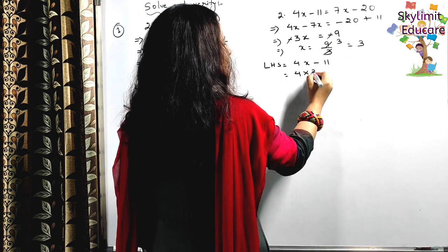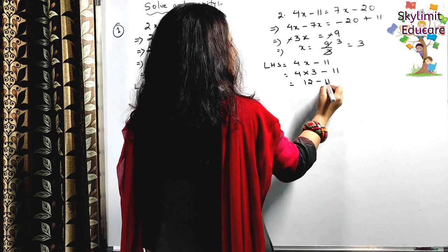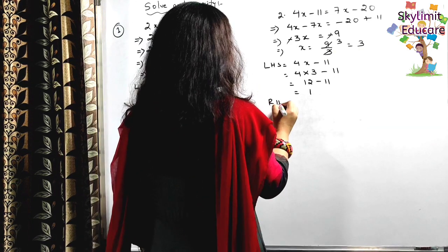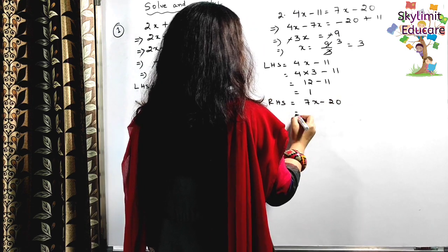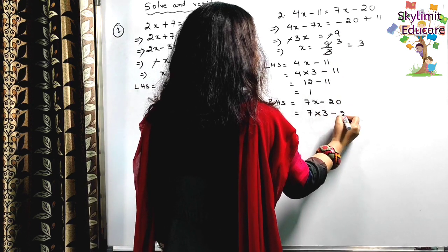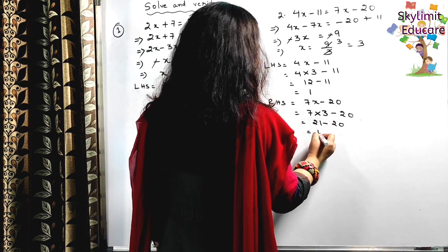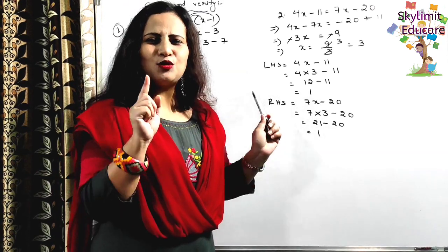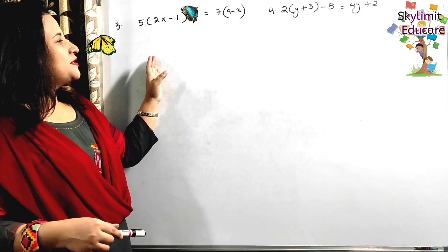Let's verify. LHS is 4x - 11: substitute x = 3, so 4 × 3 - 11 = 12 - 11 = 1. RHS is 7x - 20: so 7 × 3 - 20 = 21 - 20 = 1. LHS = RHS = 1. Hence verified.